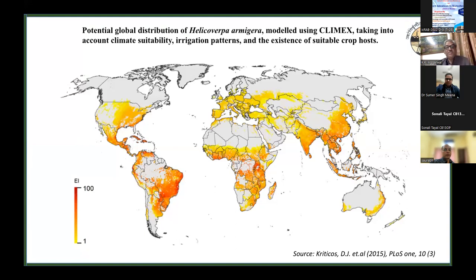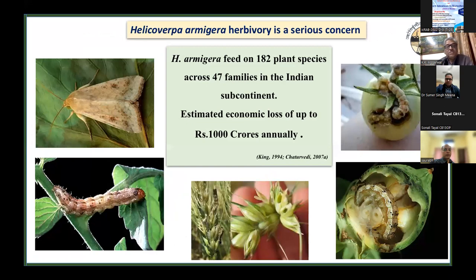This insect does not restrict itself to cotton alone. It is the most notorious insect and, as per studies, has spread across five different continents. In the Indian subcontinent it has covered almost the whole country, with the dark orange shading indicating its high abundance across large portions. It feeds on more than 180 plants, most of which are crops, spread across 47 families, and accounts for losses of more than a thousand crores per year in India alone.